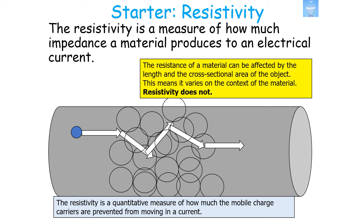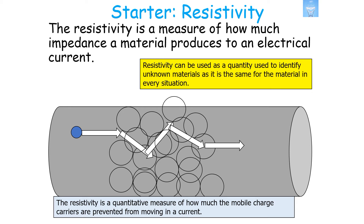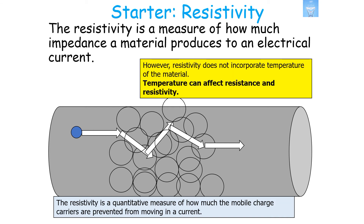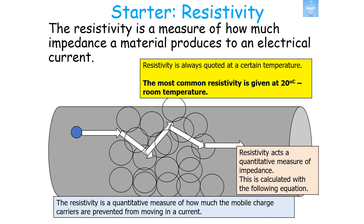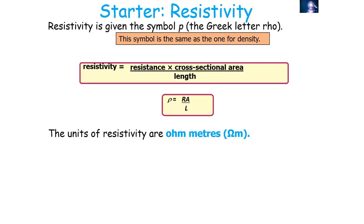The resistivity of a material is defined as the resistance generated in a wire of 1 metre length with a 1 metre squared cross-sectional area, and it is measured in ohm metres. Resistivity is a more useful quantity than resistance because it is the same for a material regardless of its dimensions — it is a quantitative measure of how much the mobile charge carriers are prevented from moving. Whilst resistance can be affected by the length and cross-sectional area of an object, resistivity does not vary with dimensions. Resistivity can be calculated using: rho equals resistance times cross-sectional area over length, or ρ = RA/L, with units of ohm metres.